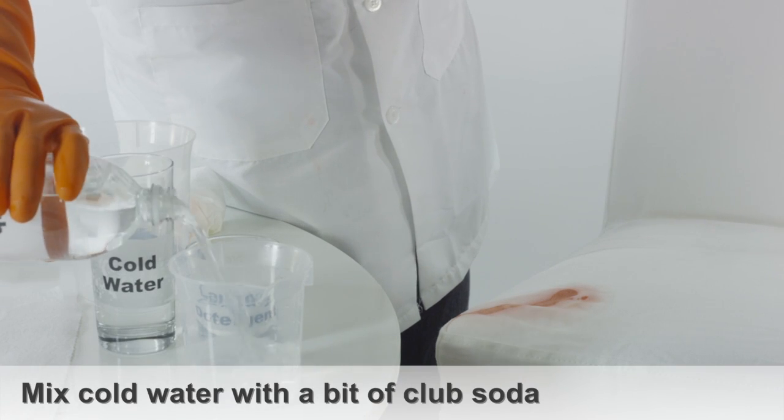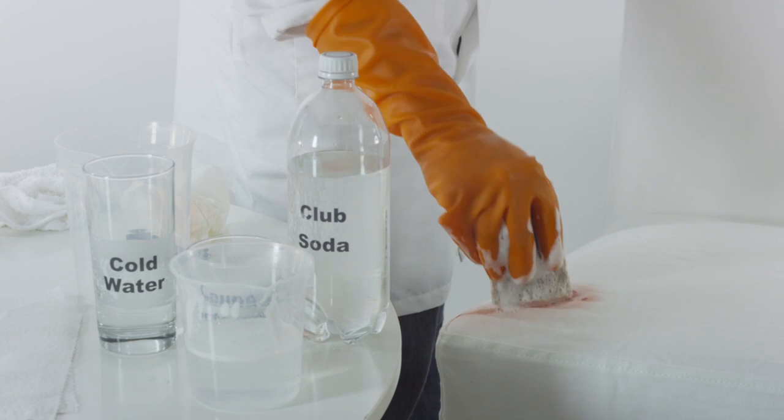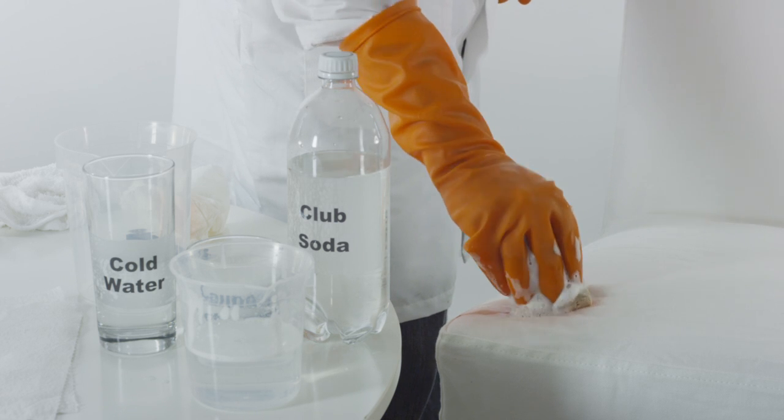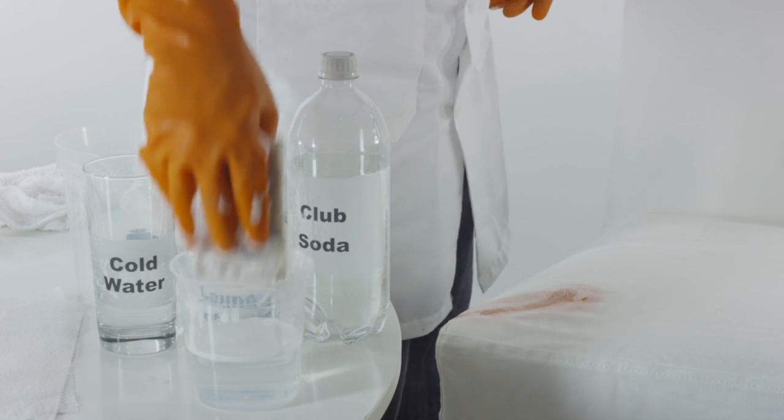Mix a cup of cold water with a bit of club soda and pour it into the affected area. Using a sponge, continue to gently blot the stain. You can stop blotting with the sponge when it stops pulling blood from the affected surface.